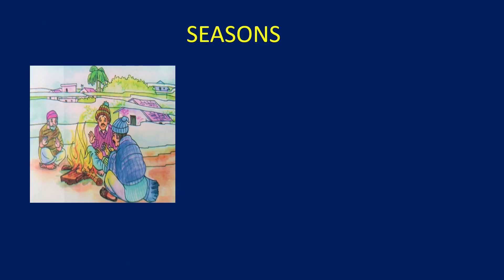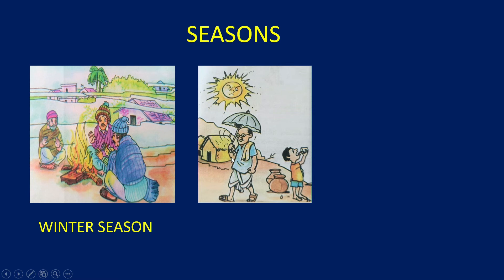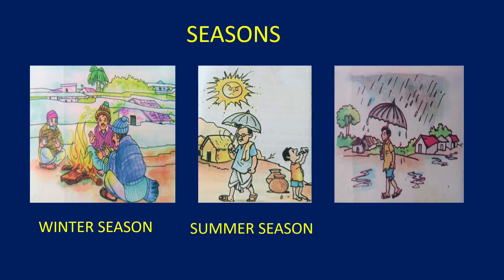Now we will discuss about seasons. Have you observed persons in the picture? They are sitting before a flame — why? To get some warmness. It is winter season. Observe this picture — a man is carrying an umbrella. There is a hot sun and no droplets of water, therefore it is summer season — it is so hot. Now observe this picture — a boy is carrying an umbrella and there are droplets of water, therefore we can easily say that it is rainy season.